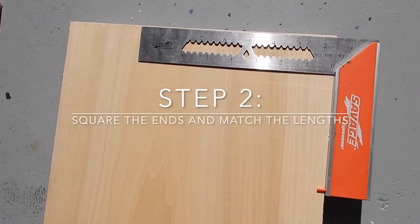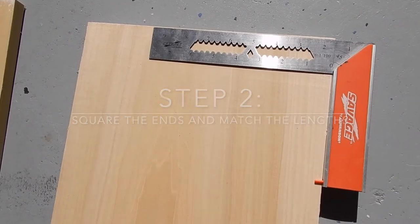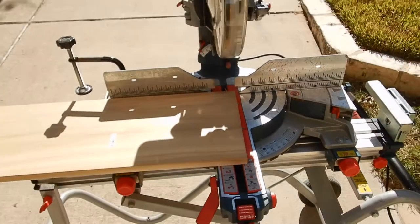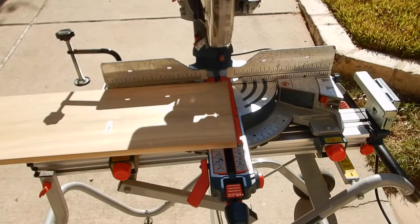Step two is to square the ends and match the lengths. Everyone knows when you buy lumber off the shelf at Lowe's or Home Depot, they're not exactly the same length. They're also not exactly square. So you need to take your time, get your square out, draw a line, cut those perfectly square, and also cut them exactly the same length as you need them.